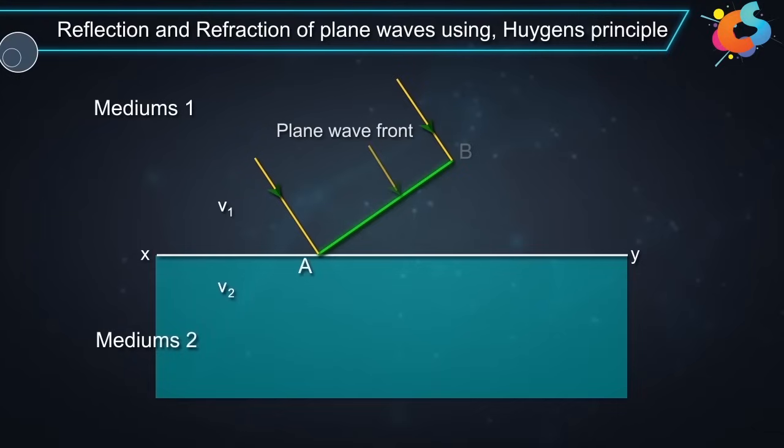Now consider a plane wave front AB propagating in this direction. A'A is incident on the interface XY at an angle I. The secondary wavelet from B strikes the surface XY